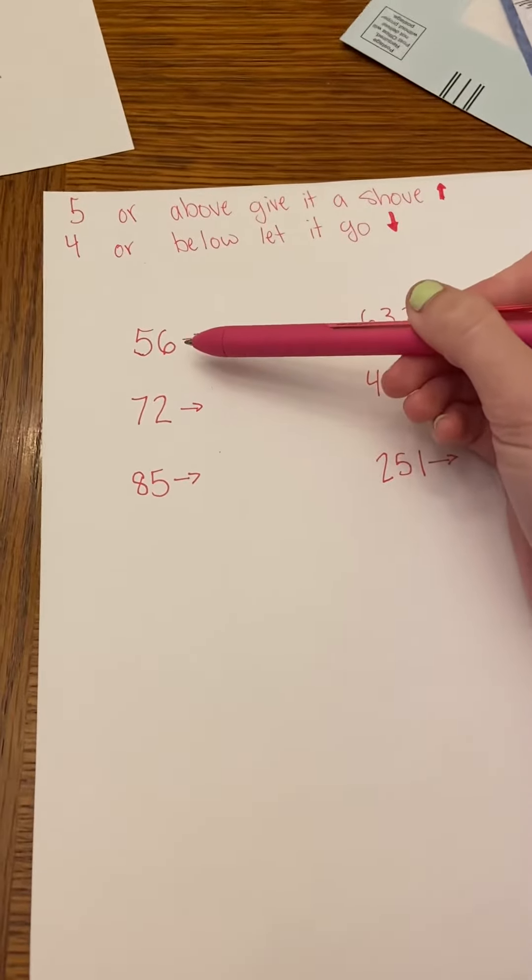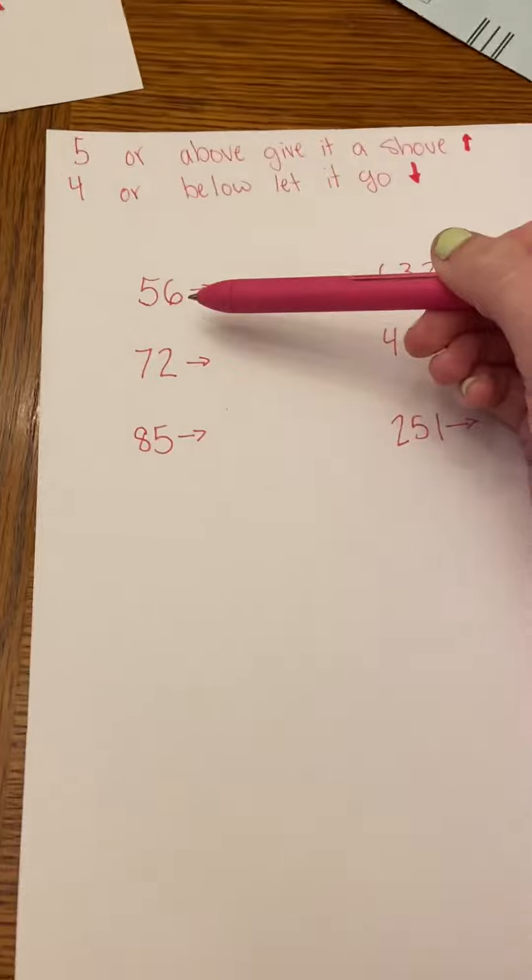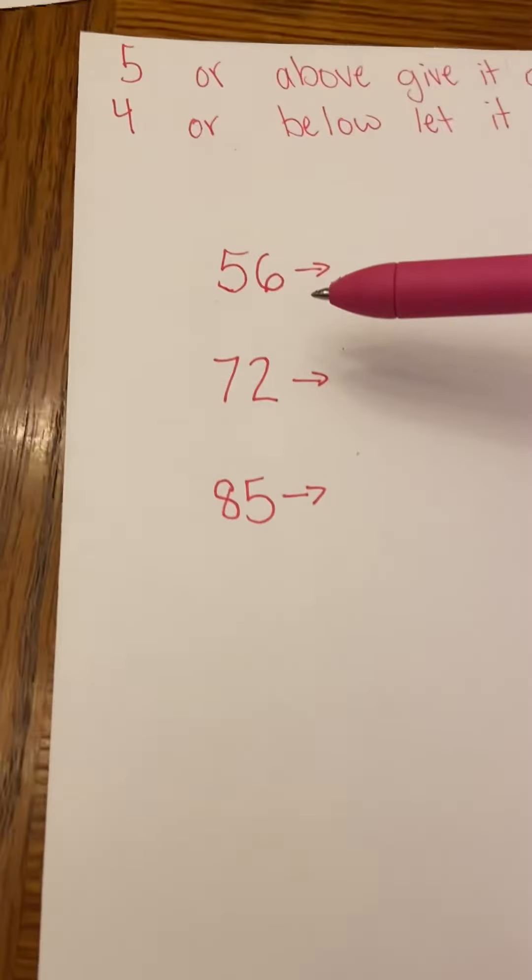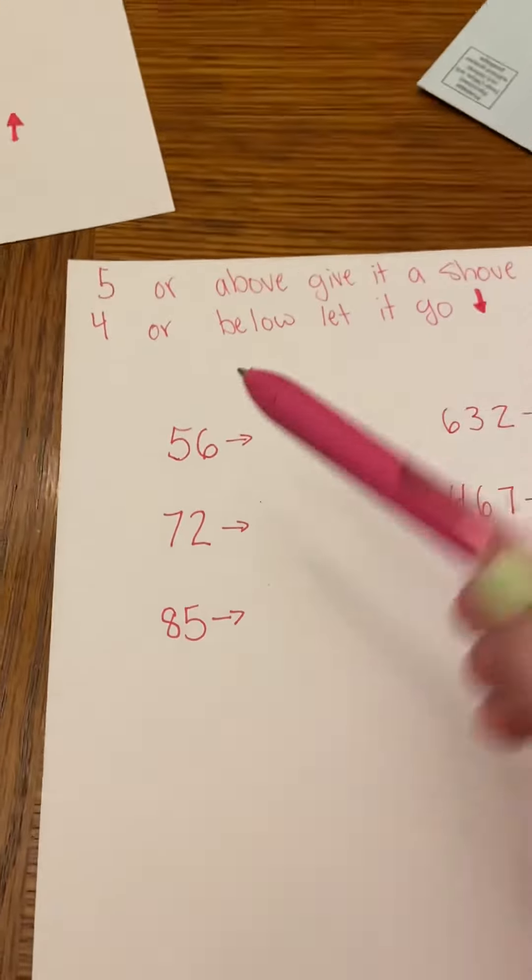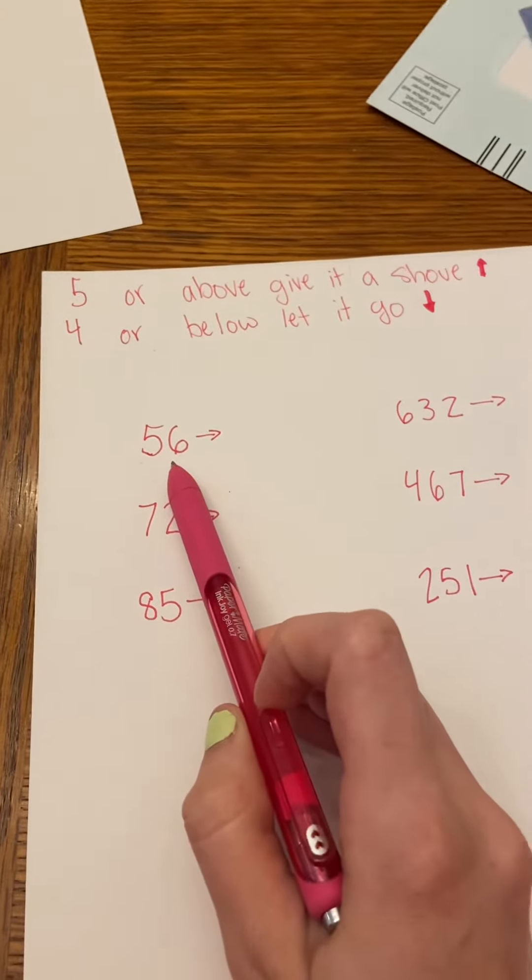When I'm rounding two-digit numbers, I want to round to the nearest ten. So in order to do that, I need to look at the number that's in the ones place.